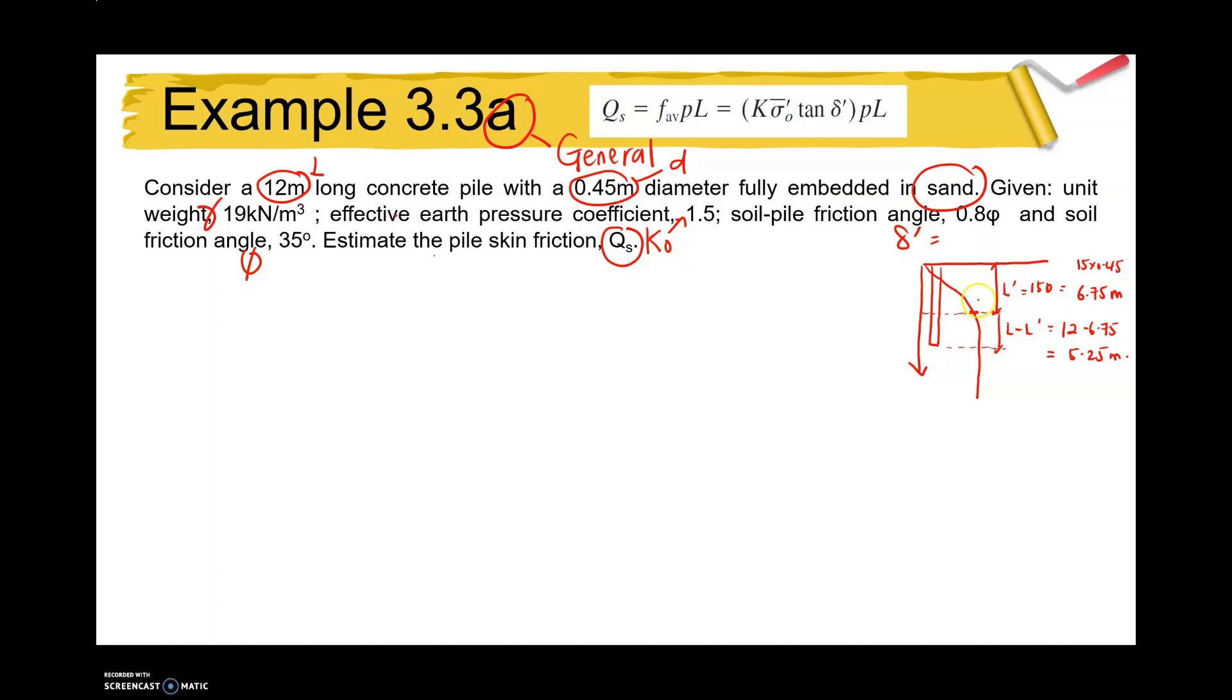Next, since delta is given here as delta prime equals 0.8 phi, so 0.8 times our phi which is 35 degrees, our value is 28 degrees.